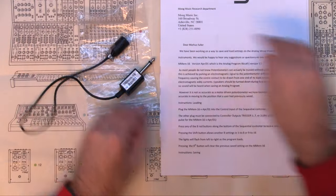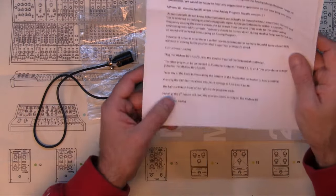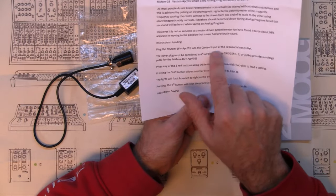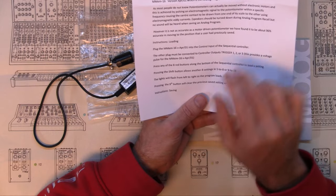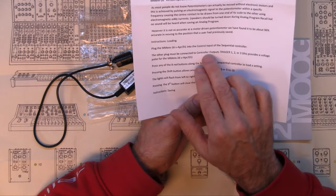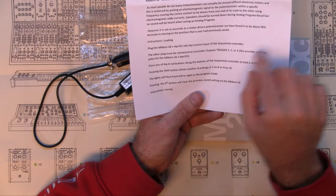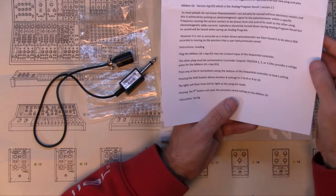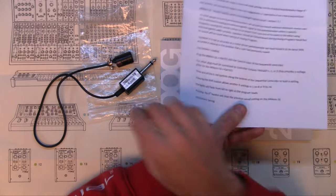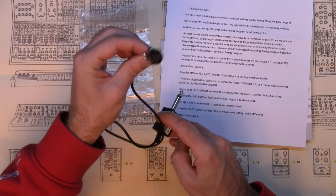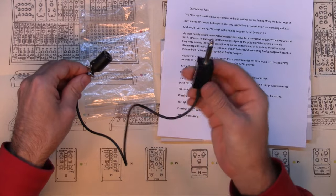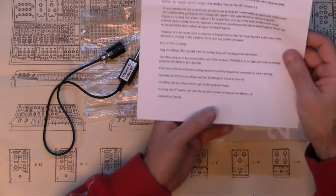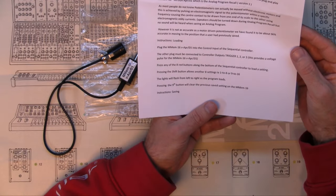So anyway, right, carry on then. Instructions for loading. Plug this into the control input sequential controller. The other plug must be connected to the controller output trigger one, two or three. This provides a voltage pulse for the MM16 APR/A1. Ah, so it's actually getting its voltage through the trigger and doing something with that end, I guess.